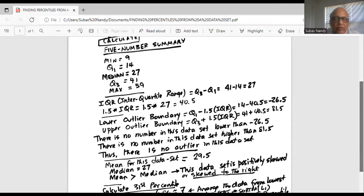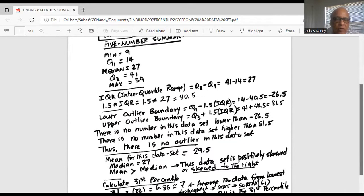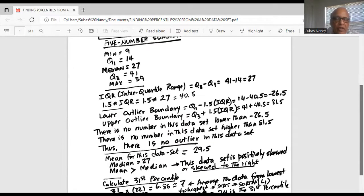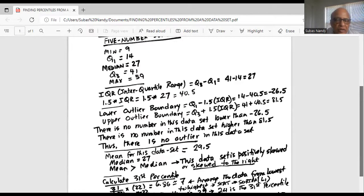Now we look for numbers smaller than minus 26.5. There is no such data point, so there's no outlier on the left side. And we look for numbers greater than 81.5. There is no such number in this data set. Thus, there is no outlier in this data set.